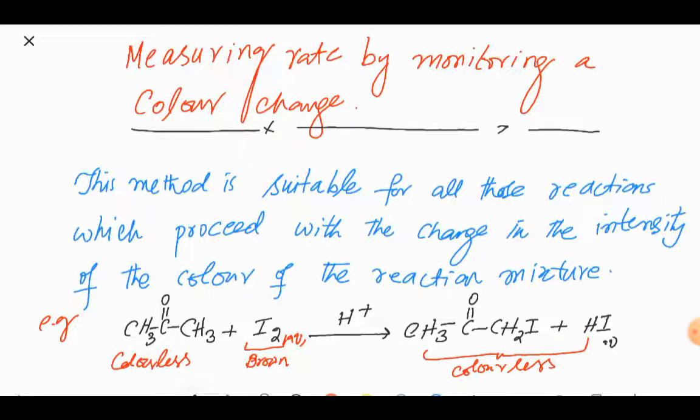This method is used for all those reactions which proceed with a change in the intensity of the color of the reaction mixture. For example, here is a reaction between propanone, which is a colorless liquid, and iodine in the presence of an acid to give colorless products.